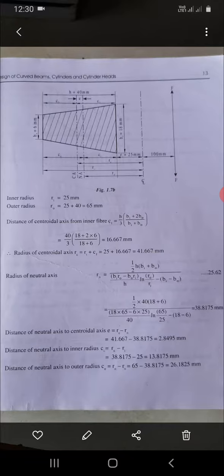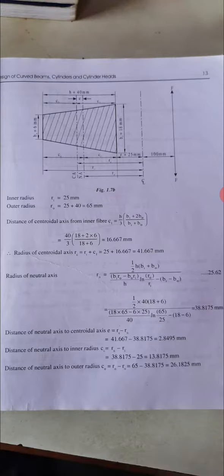Radius of neutral axis RN: using the formula H(BI + BO), substituting these values we get RN = 38.8175mm.